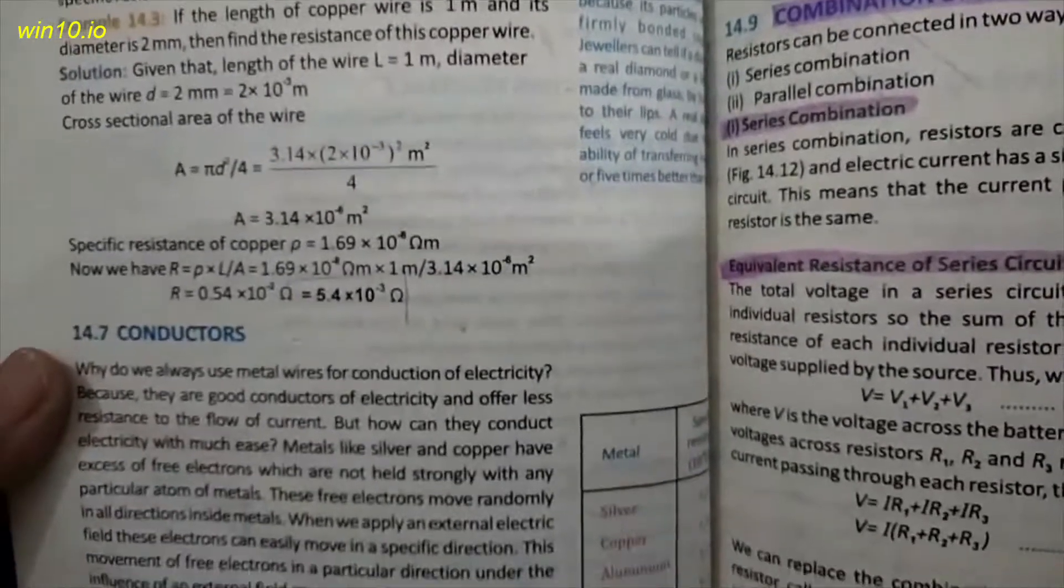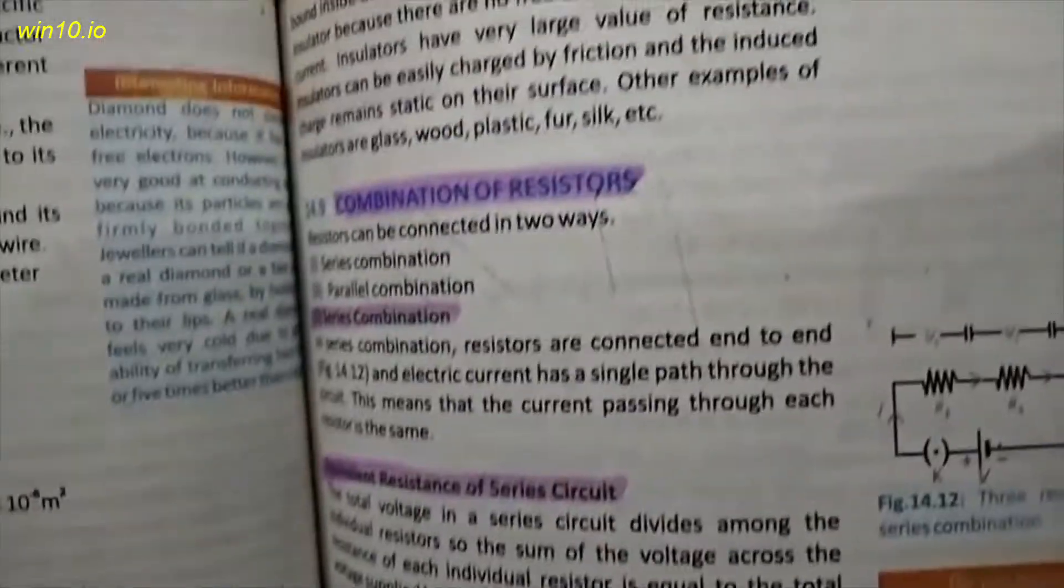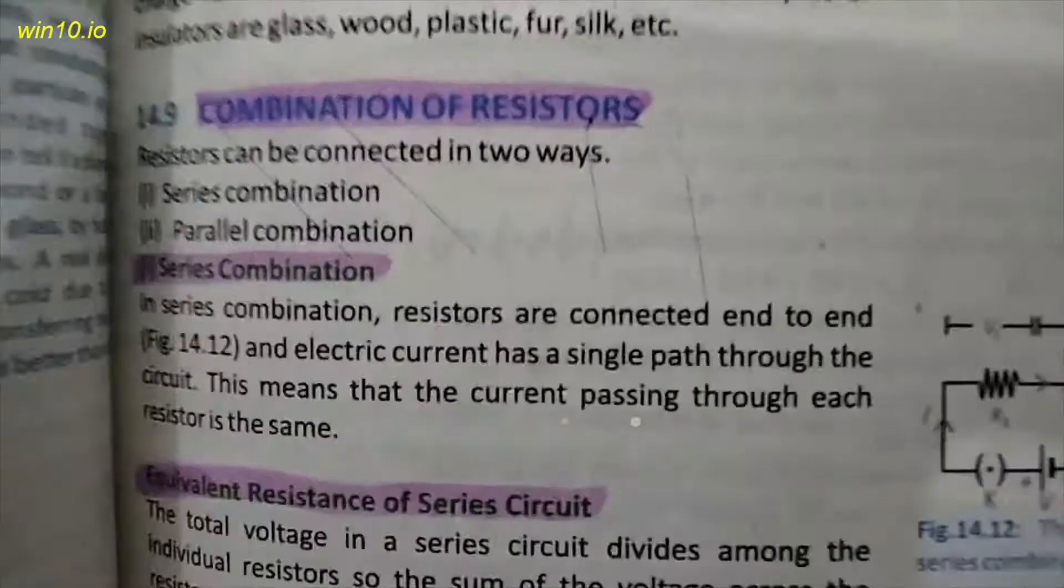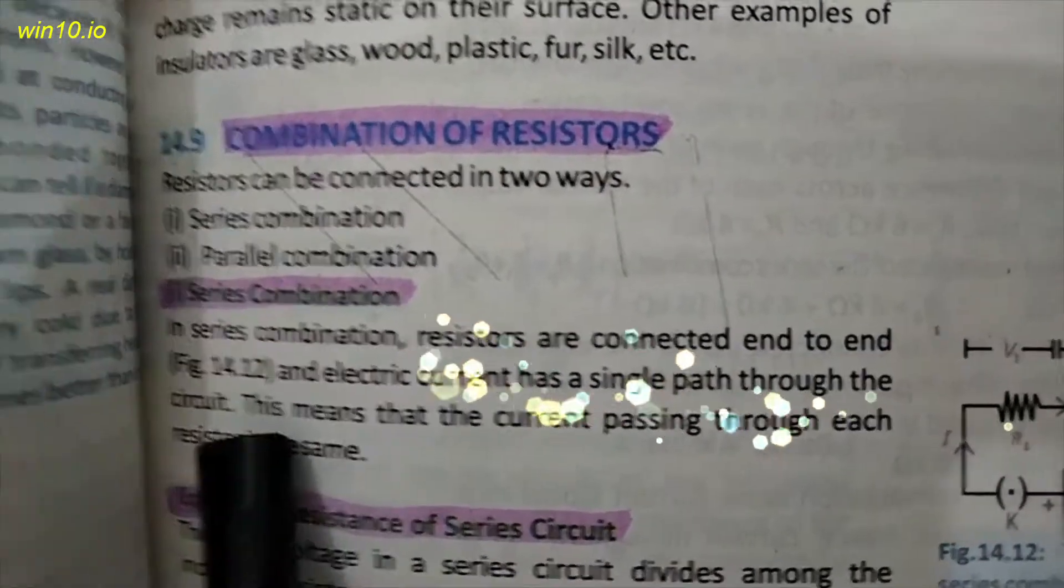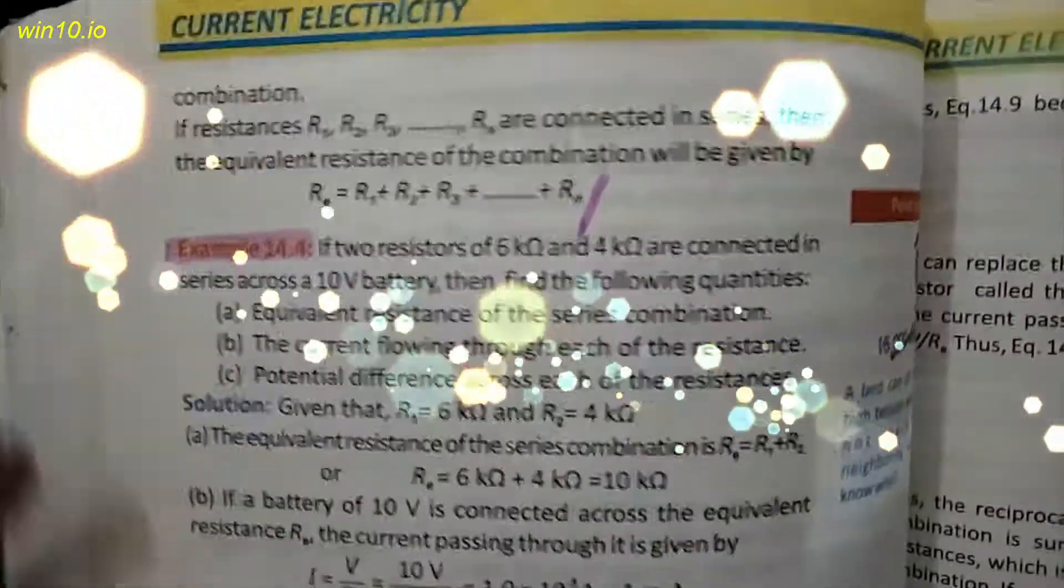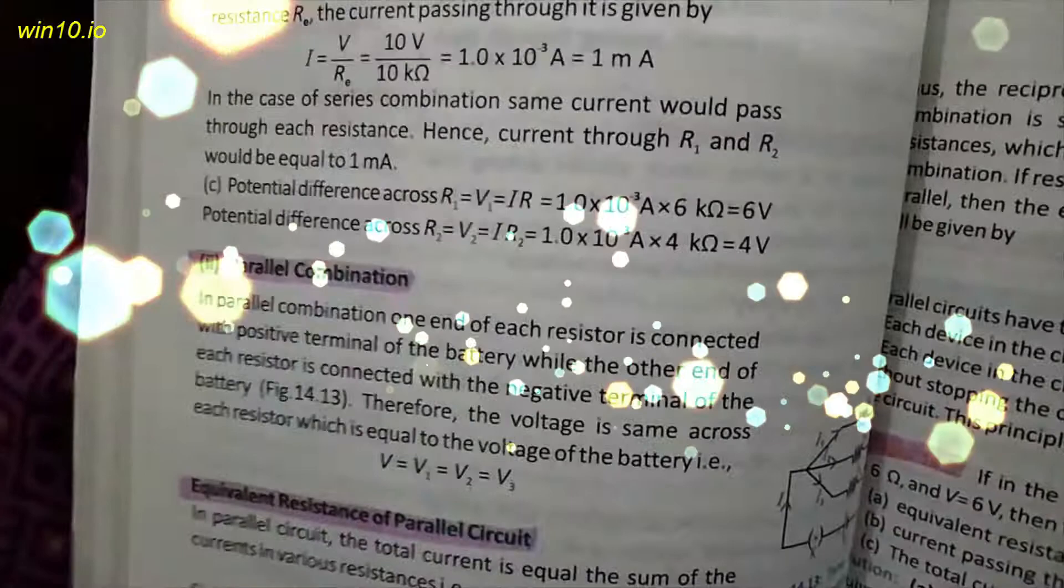Next, 100. This page skip. Page number 101, combination of resistors, series combination. Page number 102, example 14.4.